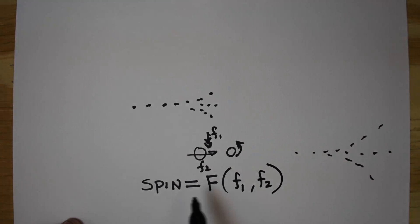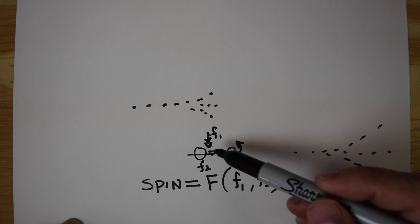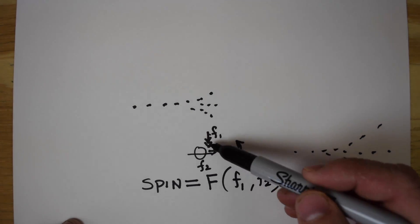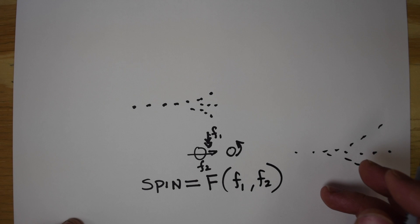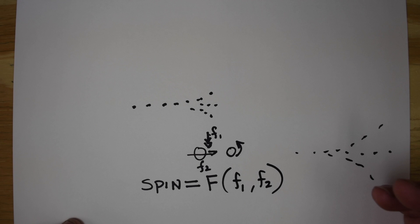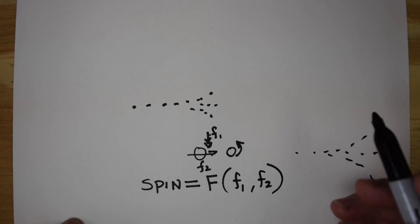So, what does that mean? It means the amount of spin that you have is a function of how hard you're pushing down on the hop-up, and how fast you push the BB past the hop-up. The faster you push the BB, the more spin you're going to get. The harder you push down, the more spin you're going to get.